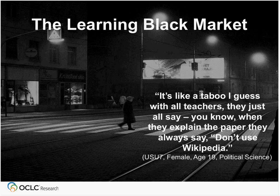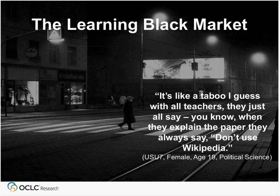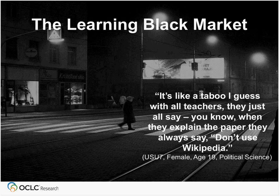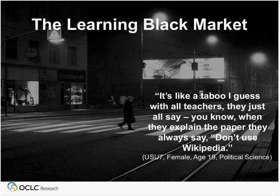A U.K. secondary school student, female, age 16, when asked about Wikipedia, said simply: 'Avoid it.' A U.S. undergraduate, male, age 19, mechanical engineering, said: 'If teachers don't like Wikipedia and don't want you to use it, a lot of students will still use Wikipedia and then cite another source. As long as it has the same information and it's not word for word, they'll use Wikipedia because it's the easiest thing to look up. It gives you a full, in-depth, detailed overview. Teachers don't like it because it's not the most reliable source — since everyone can post something on there, it's because it's too easy.'